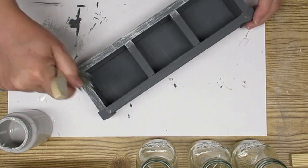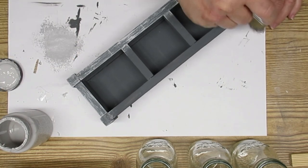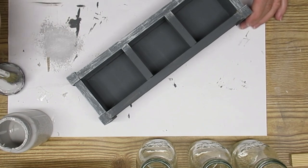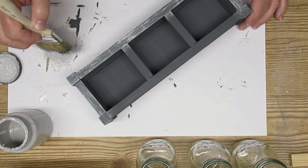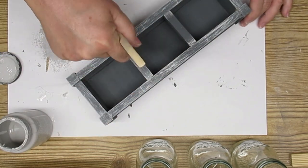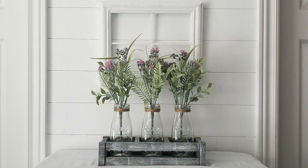I'm going to dry brush all the way around the piece, front, back, sides, inside, everywhere it has a dark gray finish, is going to get some of this dry brushing. Once the dry brushing was done, I added the jars, popped in some lavender florals from the Dollar Tree, and this is how it looks.